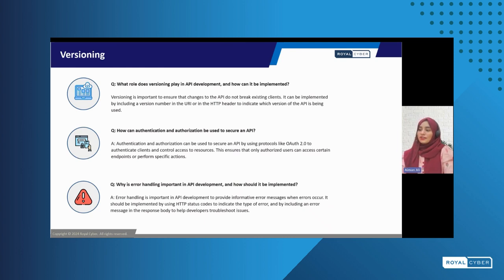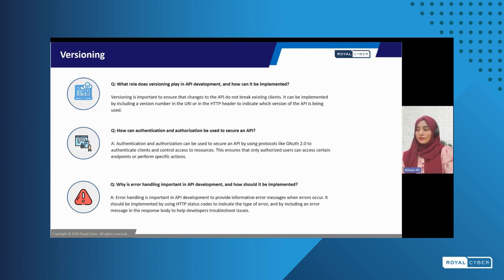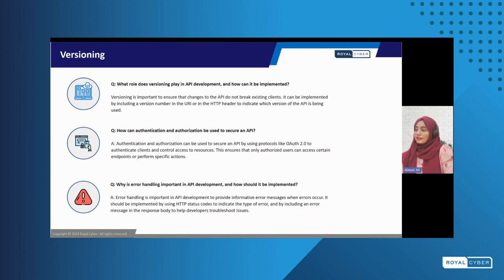Moving forward with another common practice, which is versioning. Versioning is the process of managing and tracking changes to an API — like adding new features or changes to a product without breaking the existing functionality or workflow. So versioning is a very crucial part of API development. Next is authentication and authorization, which is a part of almost every application or software. It is a very common and crucial practice that ensures only authorized users can access systems.